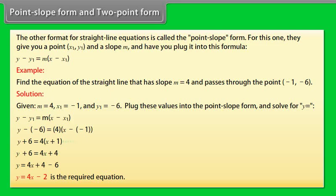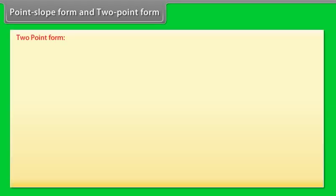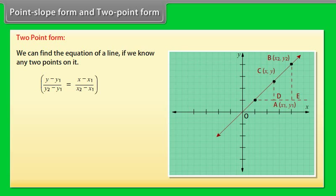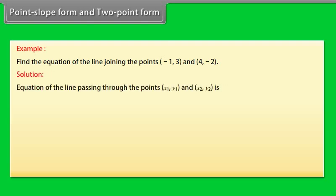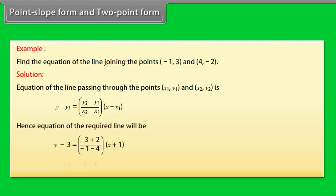Two-Point Form: We can find the equation of a line if we know any two points on it, (X1, Y1) and (X2, Y2). Example: Find the equation of the line joining the points (−1, 3) and (4, −2). The equation of the line passing through (X1, Y1) and (X2, Y2) is Y − Y1 = [(Y2 − Y1)/(X2 − X1)] × (X − X1). Hence the equation of the required line is X + Y − 2 = 0.